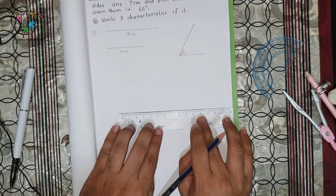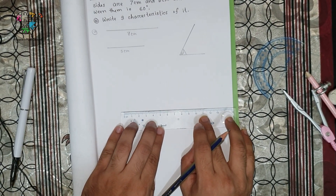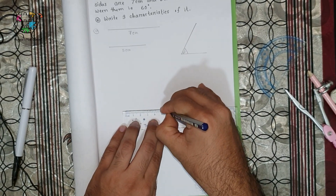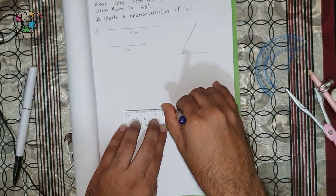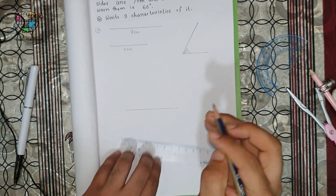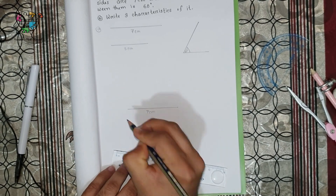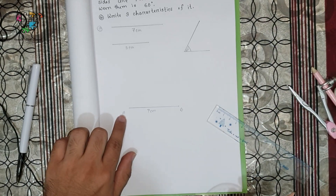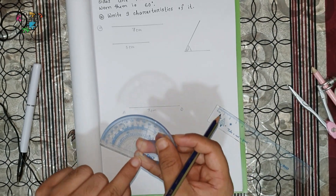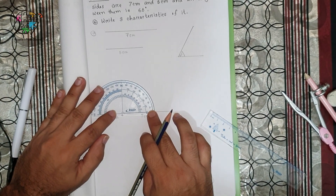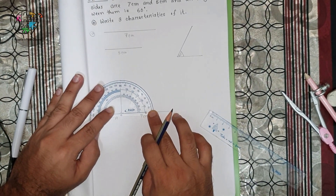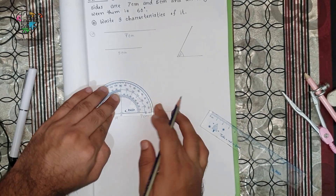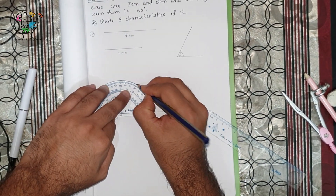See carefully. First you have to draw any side — either 7 centimeters or 5 centimeters. We draw 7 centimeters here, which is called AB. Now at point A, using this protractor, we draw an angle of 60 degrees. Match this corner point with the protractor and 180 degrees with the line, then mark the 60 degrees.